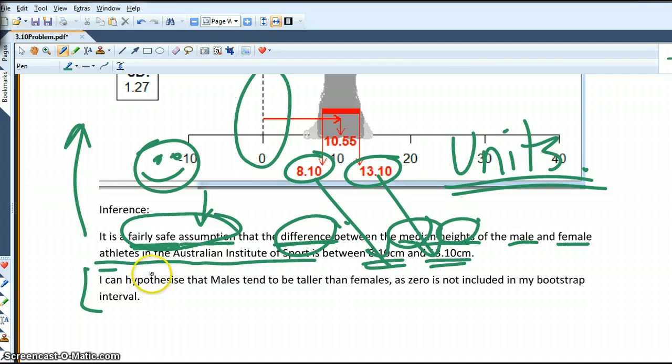This sentence here, I can hypothesise, so, you know, you're not again being certain, that males tend to be taller than females as zero is not included in my bootstrap interval. So, this is achieved level because, you know, for Merit and Excellence, you're bringing in research and it's a lot more detailed and you've got those exemplars to look at and we'll create some of our own. But the big thing to pass is you've got to mention the zero.